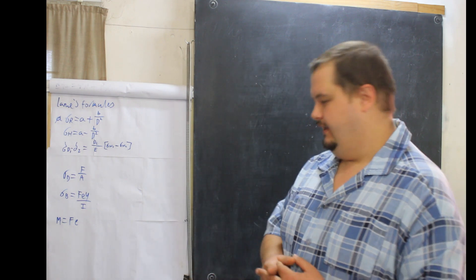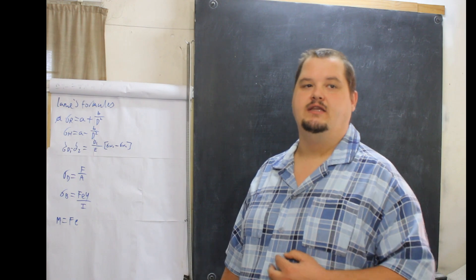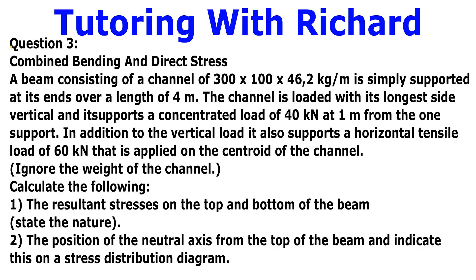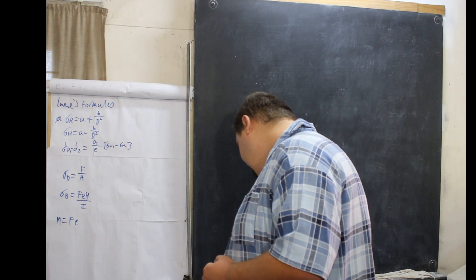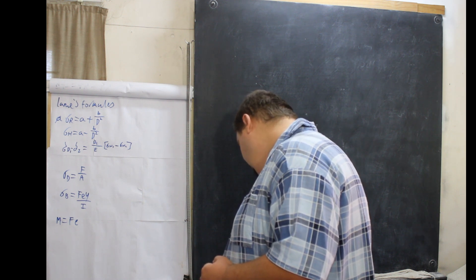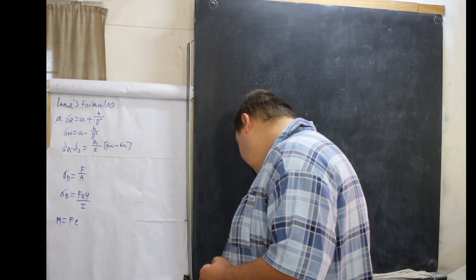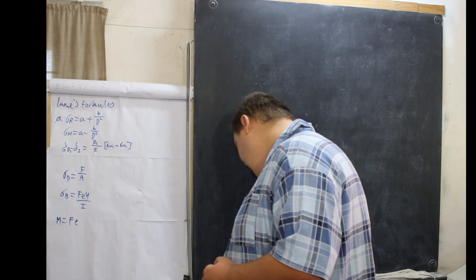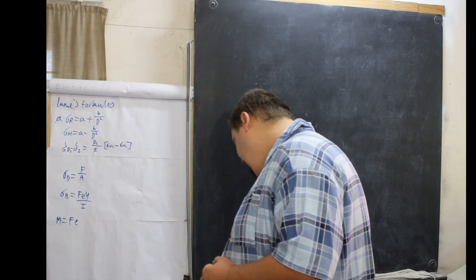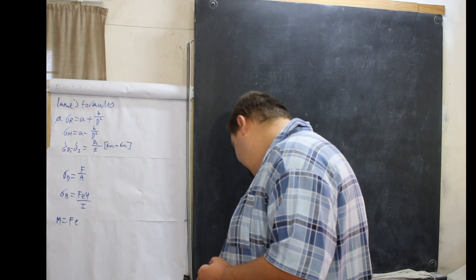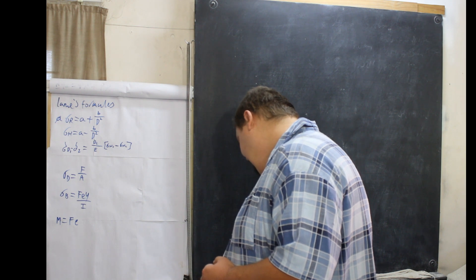Today we are doing question 3 of the DP exam. A beam consisting of a channel 300 by 100 by 46.2 kg per meter is simply supported at its ends over a length of 4 meters. The channel is loaded with its longest side vertical, and it supports a concentrated load of 40 kN at 1 meter from one support. In addition to the vertical load, it also supports a horizontal tensile load of 60 kN applied to the centroid of the channel. Ignore the weight of the channel and calculate the resultant stresses on the top and bottom of the beam and state their nature.